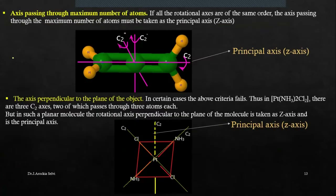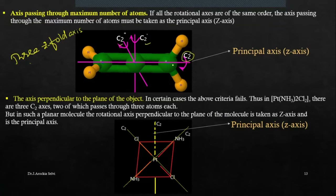Another thing: we got a three-fold axis of symmetry and three two-fold axes of symmetry — C2, C2 prime, and C2 double prime — all three are different C2s. Which is the principal axis? For a non-planar molecule, the axis passing through the maximum number of atoms is said to be the principal axis.